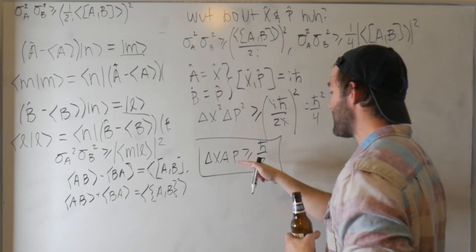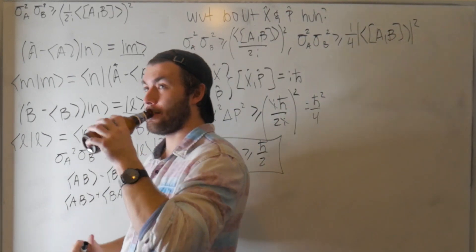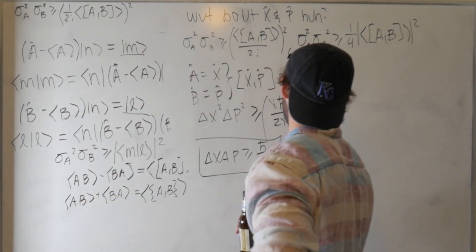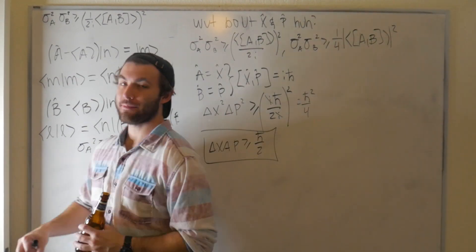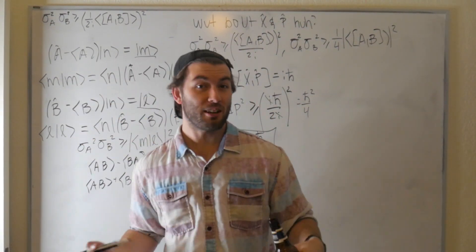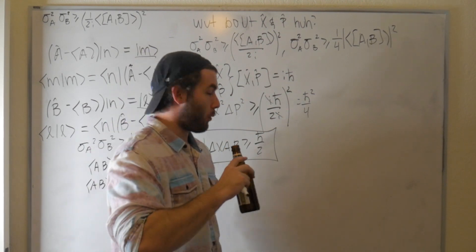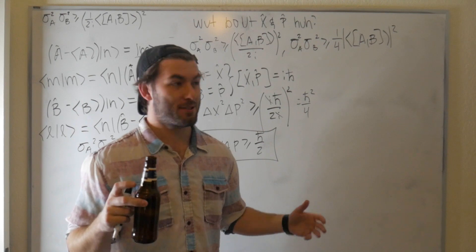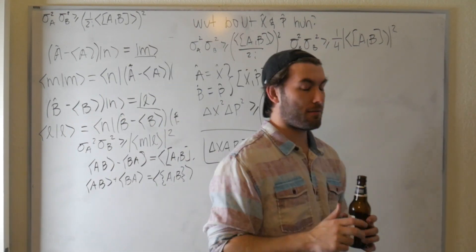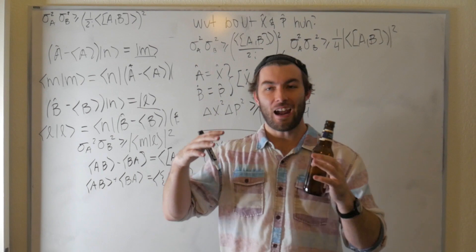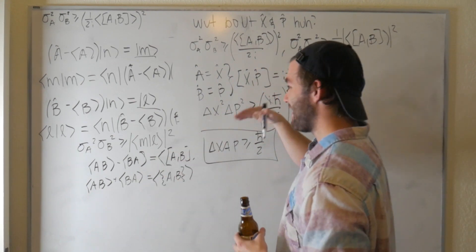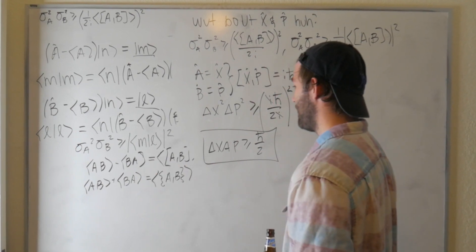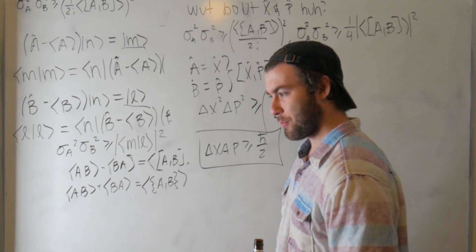We've derived the generalized uncertainty principle and reduced it to the Heisenberg uncertainty principle. I've done this video like two times already — I've got a little buzz going but we just derived it and I'm stoked. I have a good time doing these drinking and deriving episodes because some derivations are tedious and this just makes it more fun.